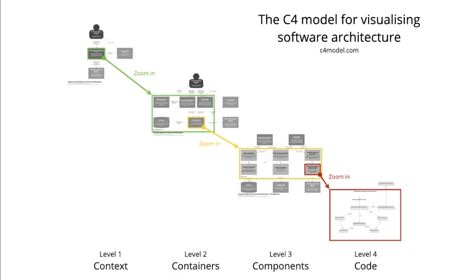The code level uses class diagrams. Looking at this diagram, you can see the breakdown of the context, the container, the component, and also the code. The context in this example contains things like the system itself — for instance, an internet banking system — the users, the external systems like payment gateways, email system, frameworks, and mainframe banking system.